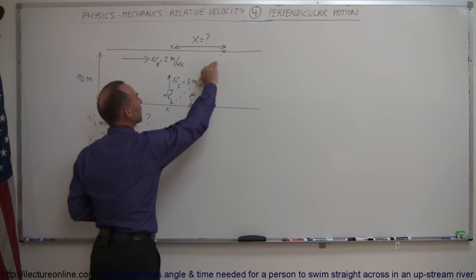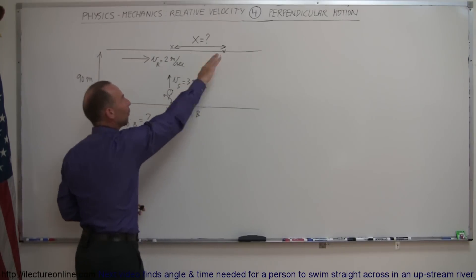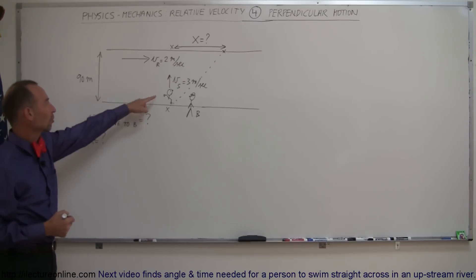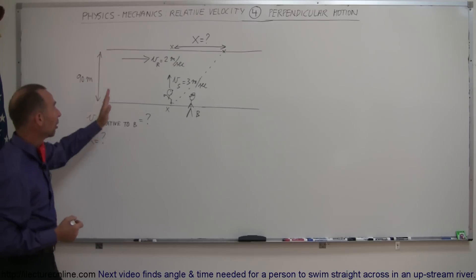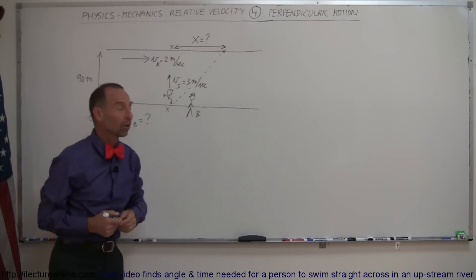The actual path that the swimmer will take will be at an angle like this and will end up on the other side of the river away from the point directly across where he started. The question now is how fast is the swimmer swimming relative to a stationary observer on the side of the river and how far will the person end up past the point directly across from the starting point.